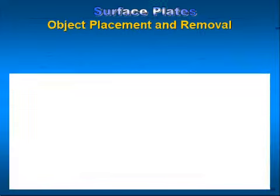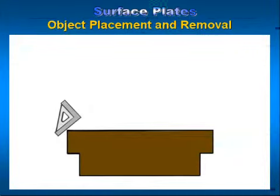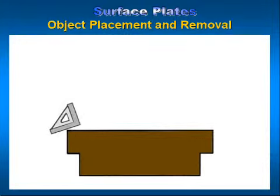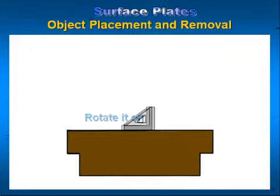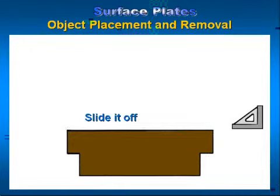Surface Plate Object Placement and Removal. When placing an object on a surface plate, bring the object to be placed on the surface to the edge of the plate and rotate the part up onto the plate. Then slide it across the plate. This will prevent damage caused by placing heavy objects directly on the surface and causing damage to the surface.